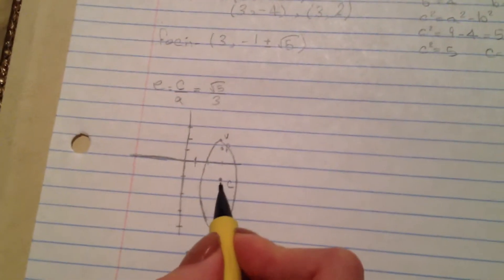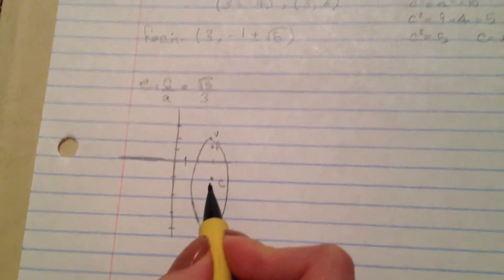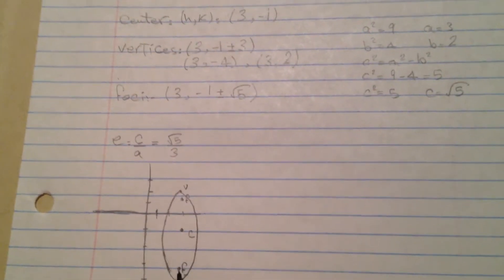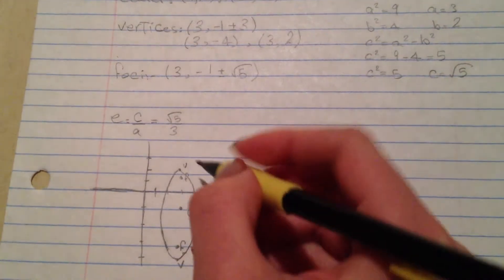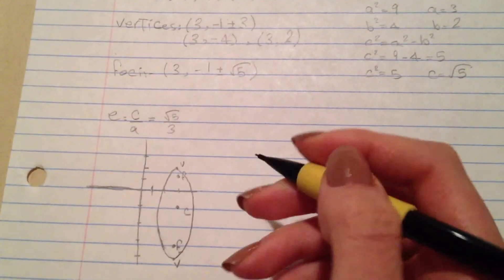Here is our center 3 comma negative 1 and here are our foci and here are the vertices.